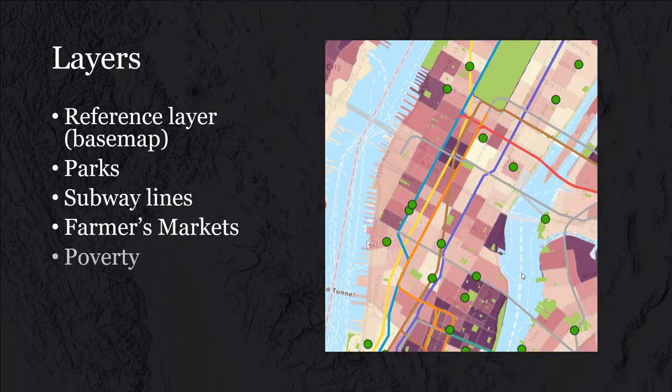How about farmers markets? How about poverty? The ways GIS gets used are not only about layering and visualizing this kind of information on top of each other, but most importantly about using the software to analyze it. Questions like: what is the relationship between farmers markets and subway lines? What is the relationship between subway lines and poverty? Are there more parks in areas of higher affluence? Do areas of high poverty lack access to transportation or subway lines? These are the kinds of questions we can visualize and analyze.